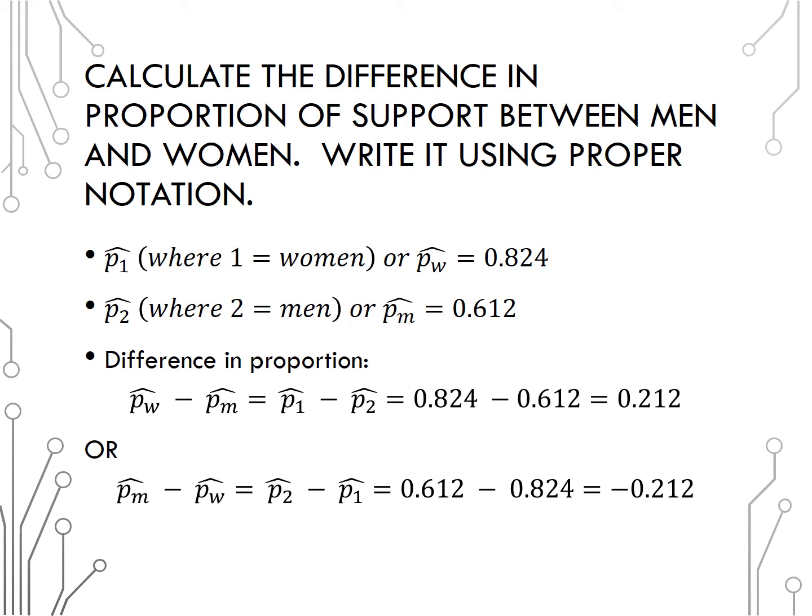Then the difference in proportion, p hat w minus p hat m, or p hat 1 minus p hat 2, would be 0.212. I could also write that as p hat m minus p hat w, or p hat 2 minus p hat 1, is negative 0.212. Note that if we do not give you a specific order of subtraction, you can use either. Just make sure you are consistent in the order of subtraction throughout the problem.